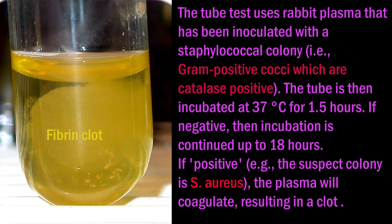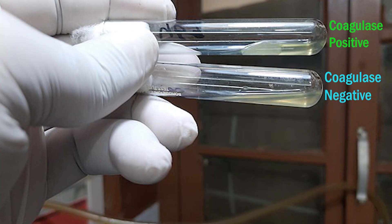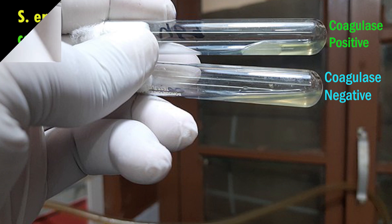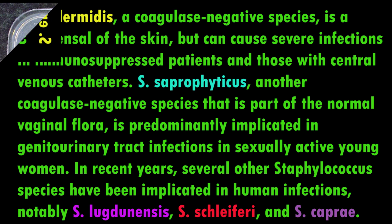Next, the coagulase test is done for identification of Staphylococcus aureus. There are two types of coagulase: free and bound coagulase. Slide coagulase positive colonies are confirmed with the tube coagulase method. Staphylococcus aureus is coagulase positive. All other coagulase negative Staphylococcus species require further identification.